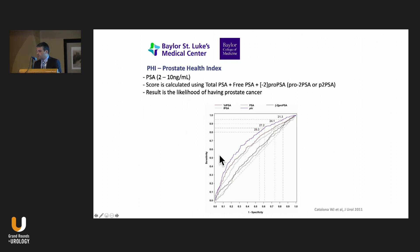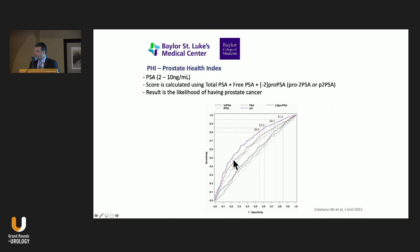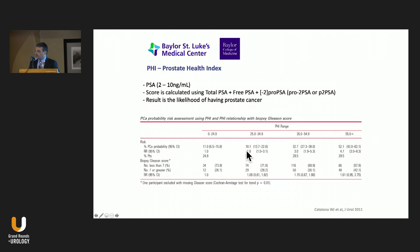Let's talk about the markers now. PHI is indicated for patients with PSA between 2 and 10. The score is calculated based on the total PSA, the free PSA, and the PRO-2 PSA, and then it gives you the likelihood of having prostate cancer on a subsequent biopsy. The ROC curve shows how the PHI score outperforms the total PSA, the free PSA, and the percent free alone. A table shows for different ranges of PHI scores the probability of prostate cancer and the probability of having a Gleason score greater than 7.